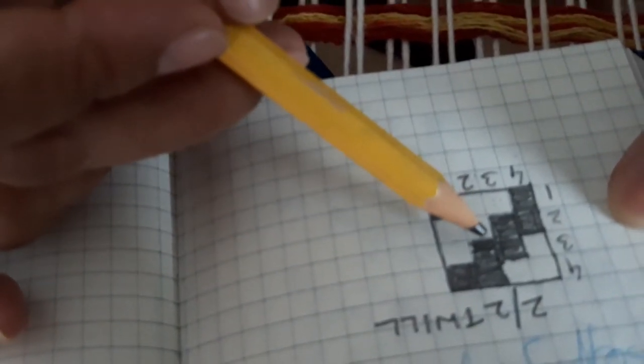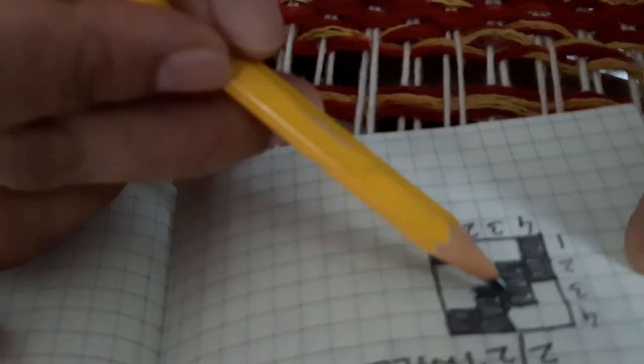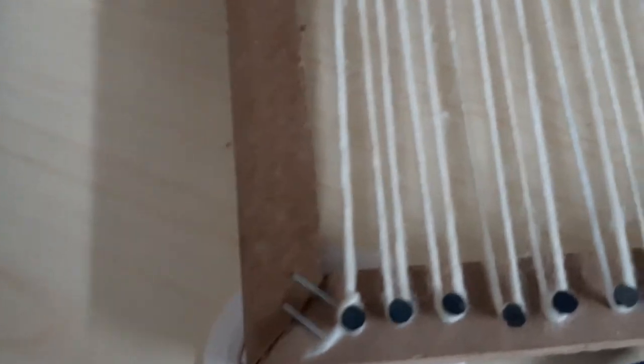In the next pick, yarns two and three are up. So we will do two and three. One, two, three, four, so the center ones, two and three, are up.